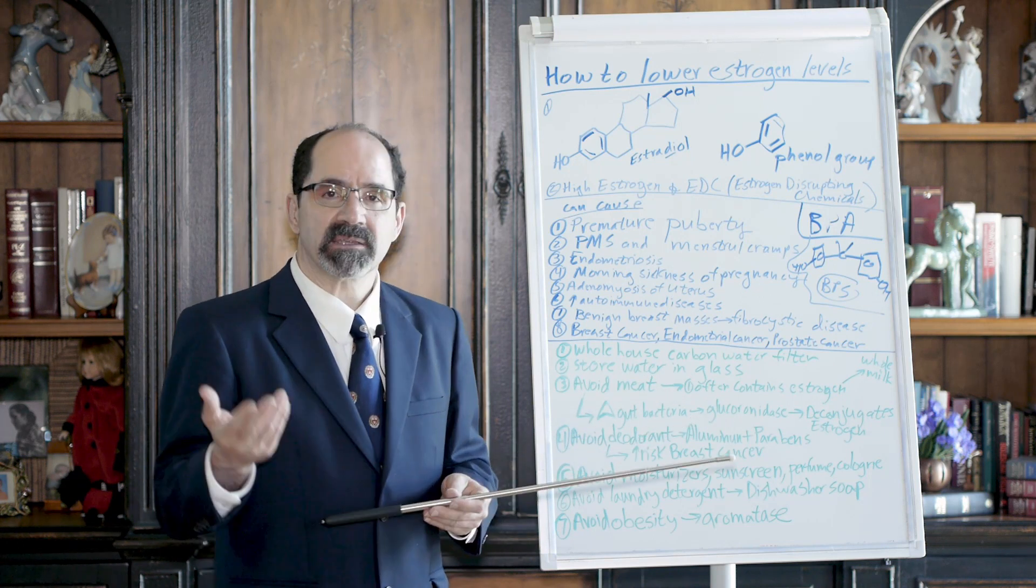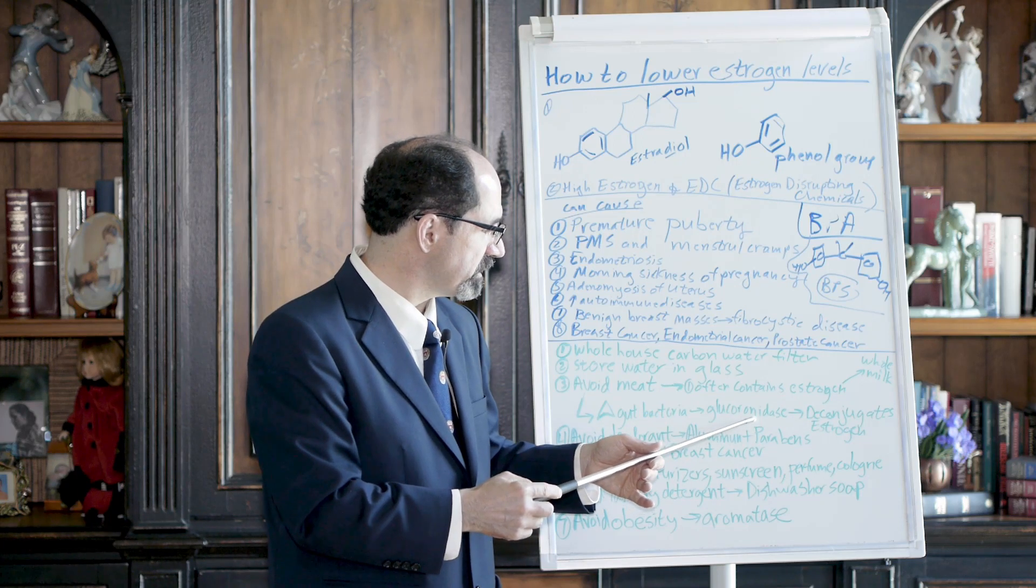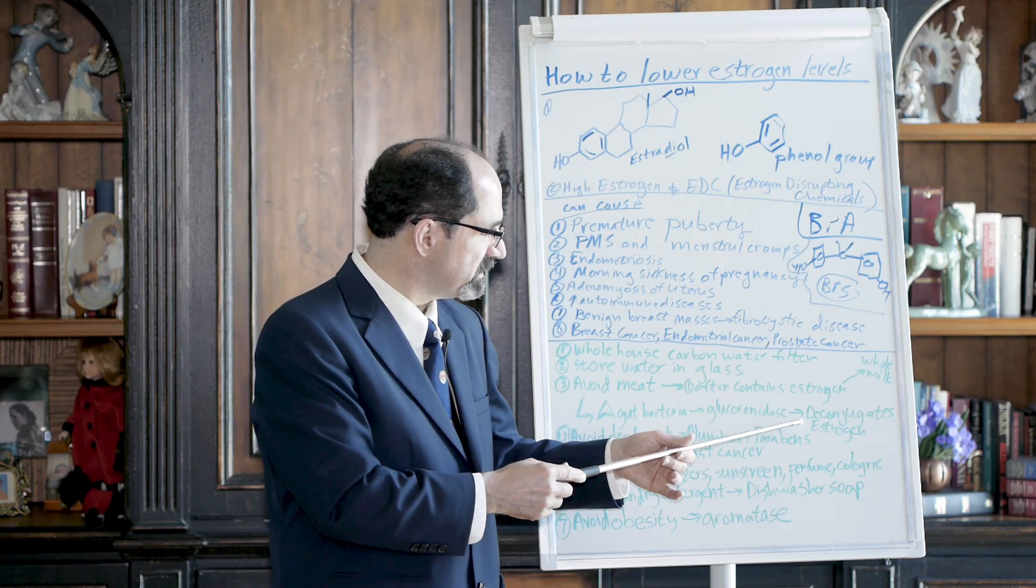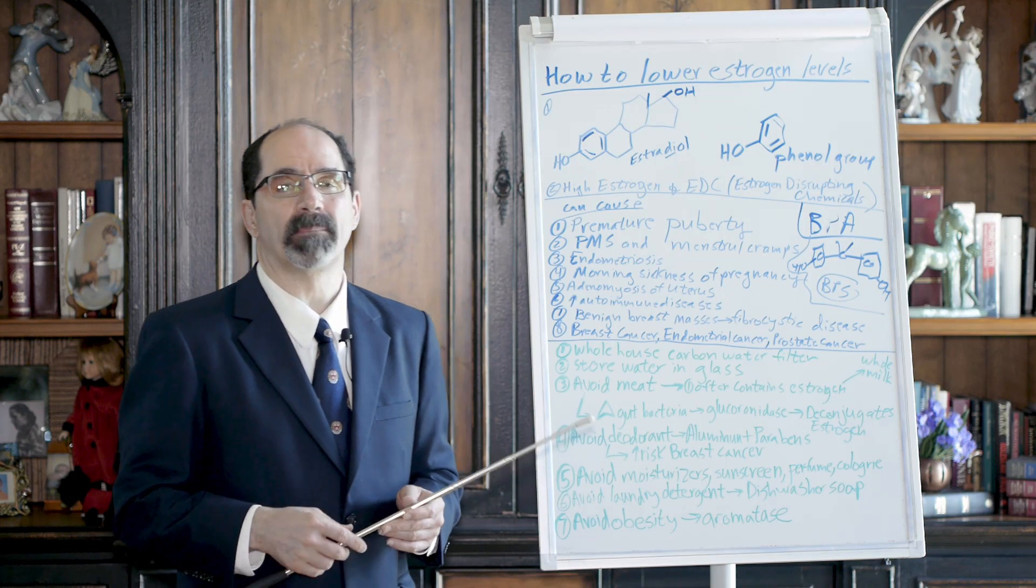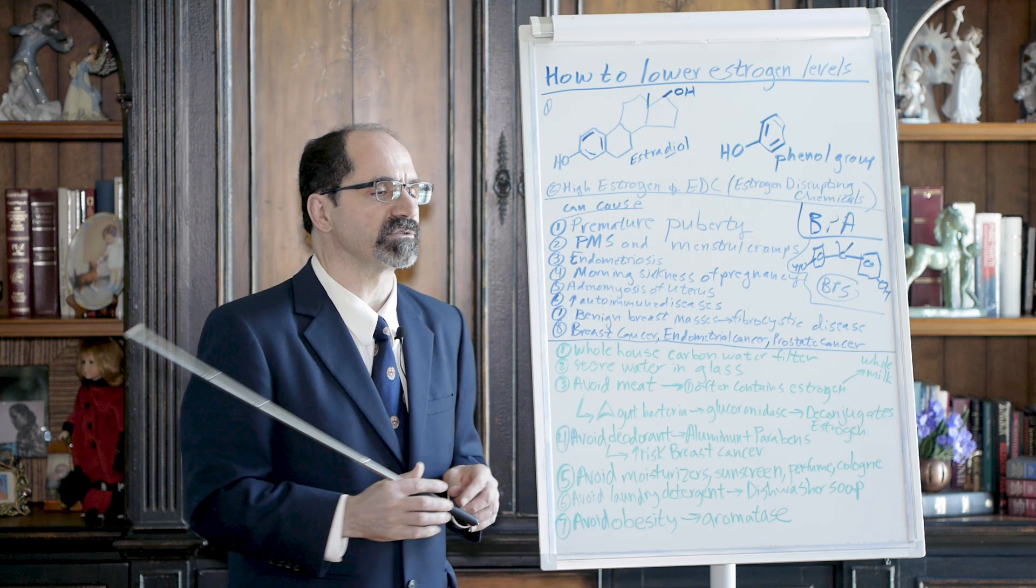But to protect it from being reabsorbed in our gut, it's conjugated by the liver. The bad gut bacteria from the meat will deconjugate that estrogen. It gets reabsorbed into our body, and that will cause a lot more fibroid tumors. Oh, I forgot to write fibroids up here as things that estrogen causes.